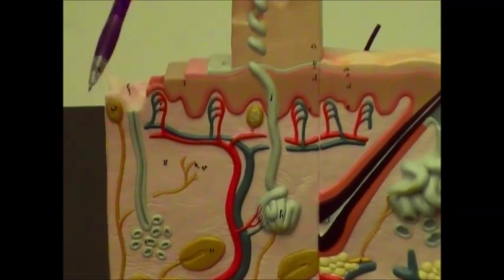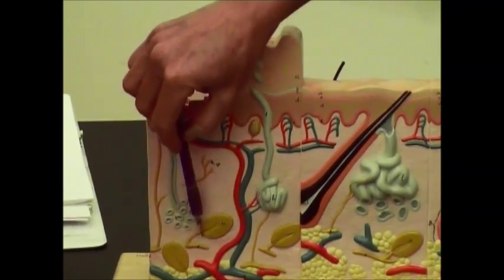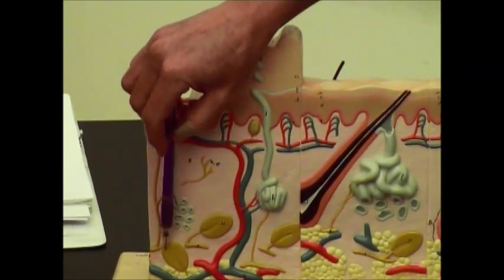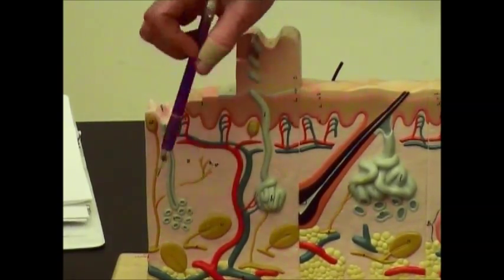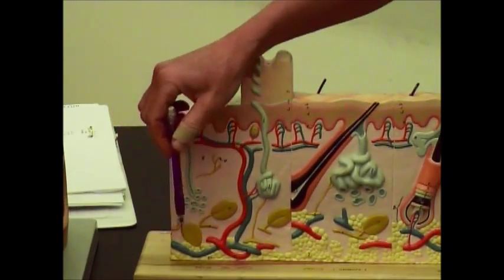Then, as you get deeper pressure pushing down, you will go and stimulate these larger receptors down here known as pacinian corpuscles. When something pushes on them, it actually flattens them out and that stimulates an action potential.